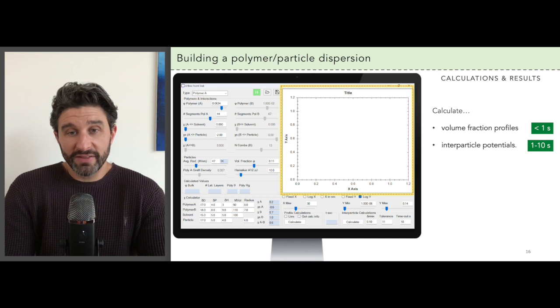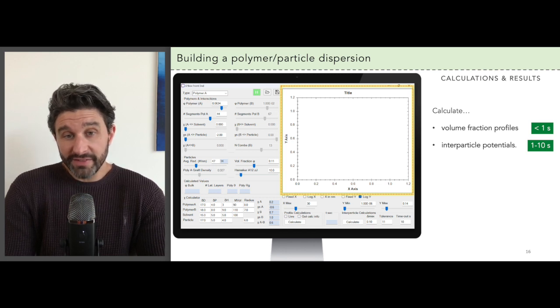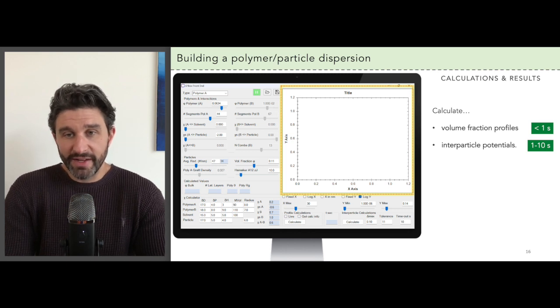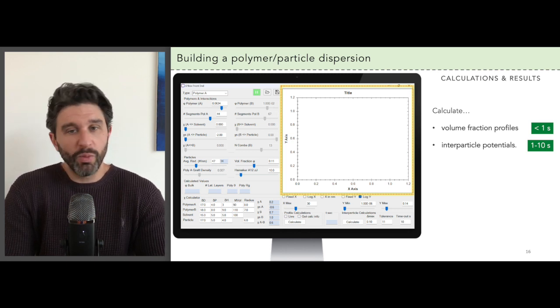For now the important point is that these calculations are really fast. The volume fraction profiles usually take less than one second to calculate, and then the interparticle potentials only take around one to ten seconds.